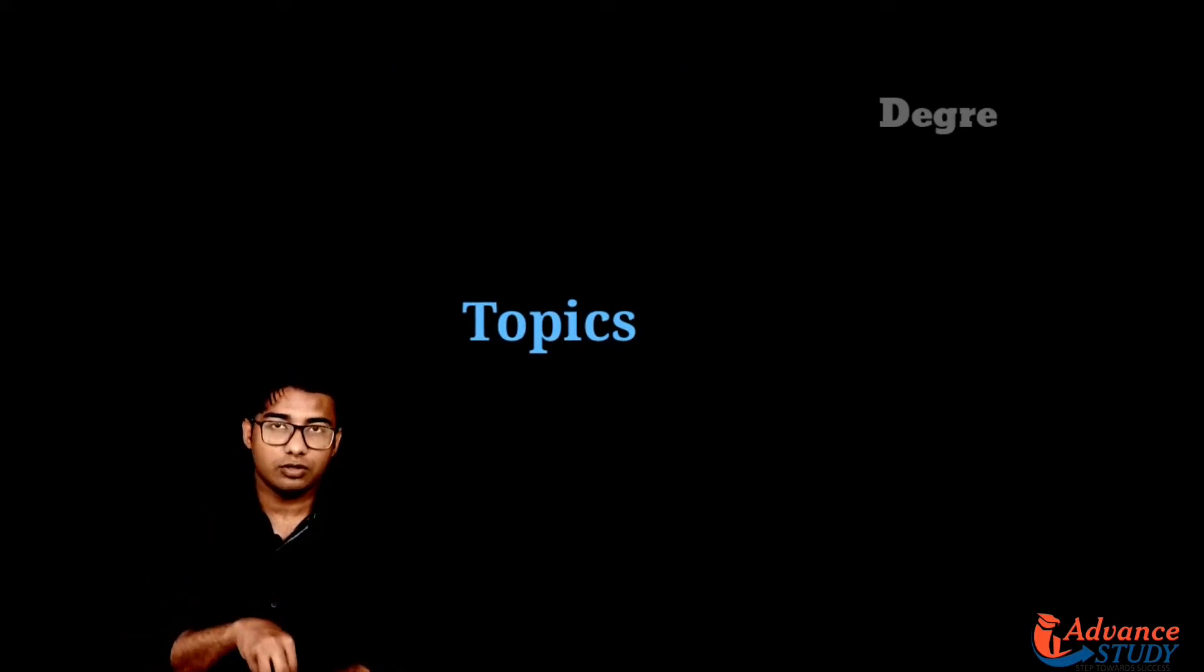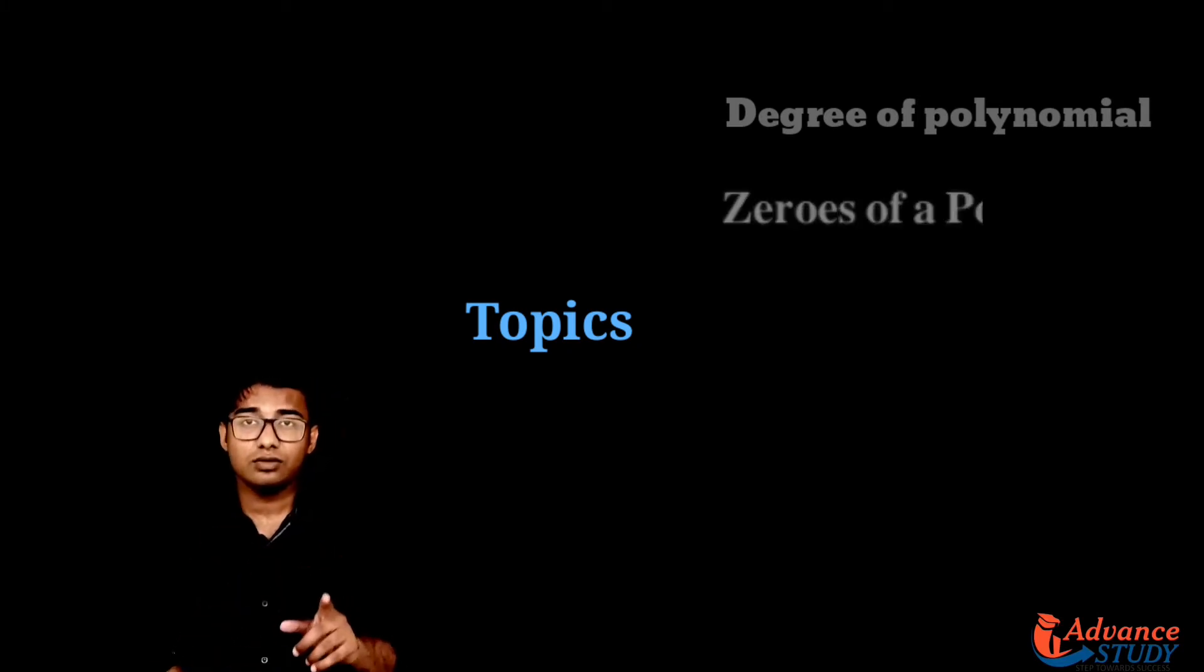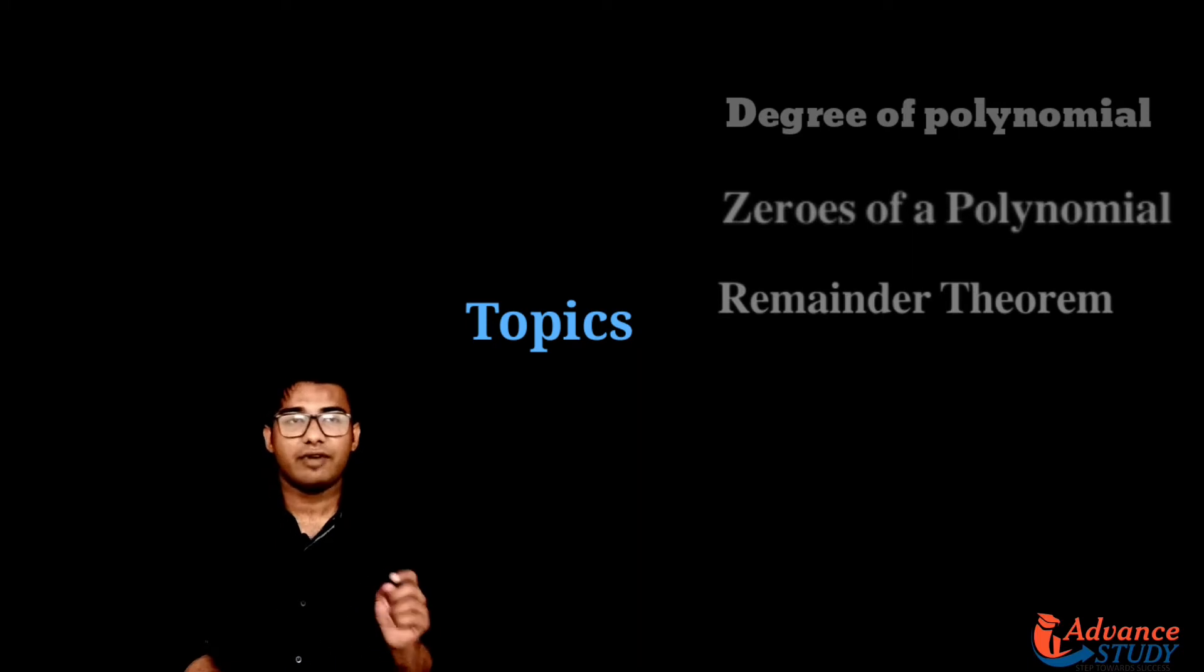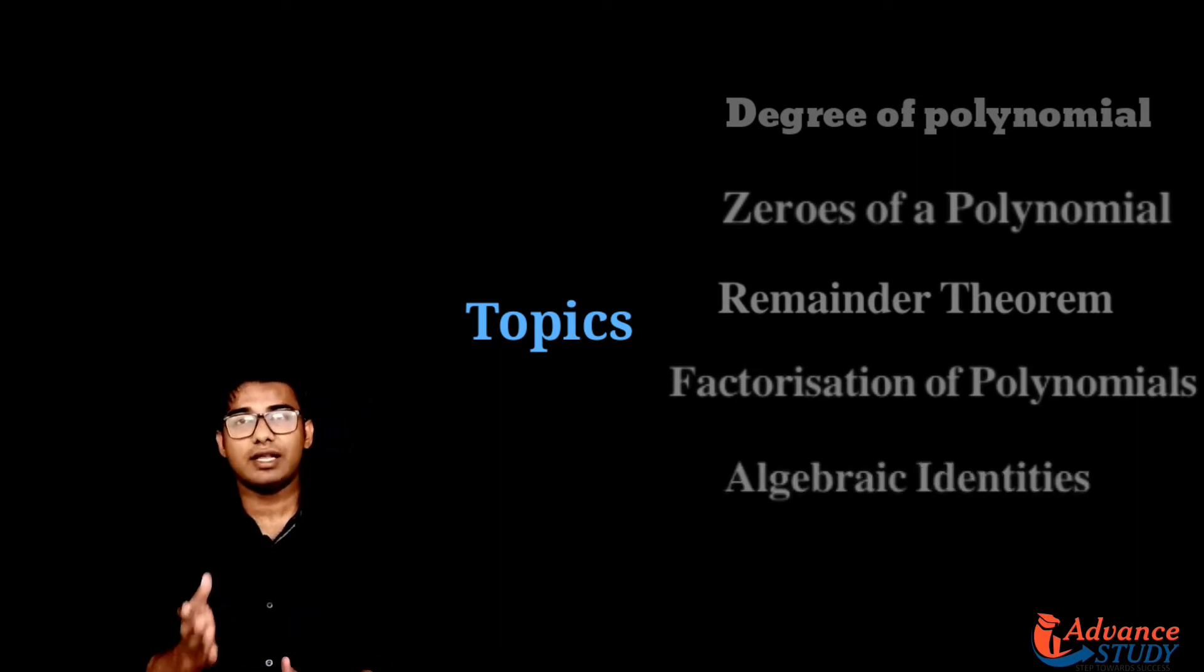In this chapter we need to study degree of polynomial as the first topic, zeros of the polynomial as the second topic, third topic is remainder theorem, fourth topic factorization of polynomials by splitting the middle term and factor theorem, and the very important part of this chapter is algebraic identities.